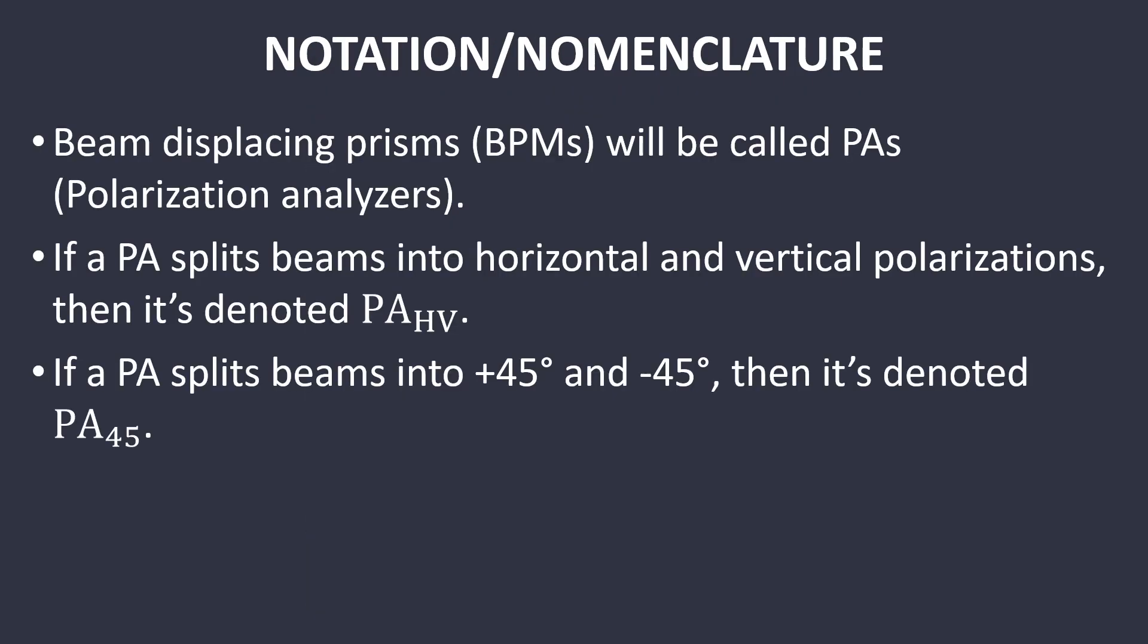As some notation and nomenclature, we have BPMs as beam displacing prisms being called PAs, standing for polarization analyzers. If a polarization analyzer splits a beam into horizontal and vertical polarizations, then it's denoted PA_HV. If it splits into 45 degree angles, both positive and negative, then it's denoted PA_45. There will be different things further on that follow this general naming scheme, and if anything is ambiguous, it will be clarified at the time it's presented.